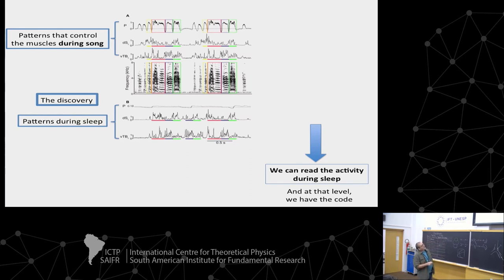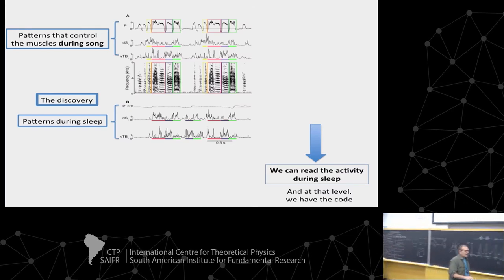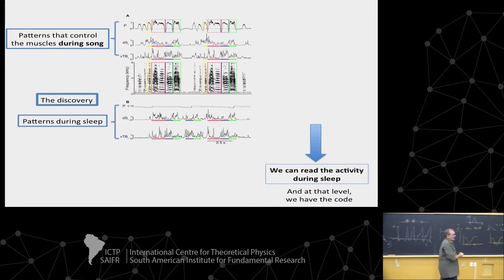If you look at them, they look very similar to the patterns during the day. For example, the green channel here would have these spikes — a huge spike here — and you recognize it. Or the blue one that has five spikes matches five spikes in the template. During the night, the bird is completely silent, but at the syrinx you have patterns of activity.